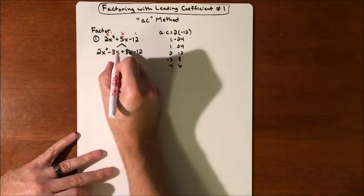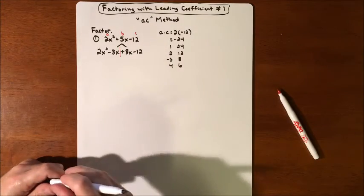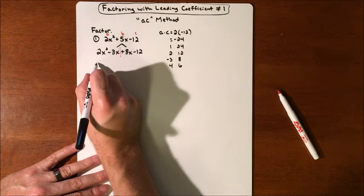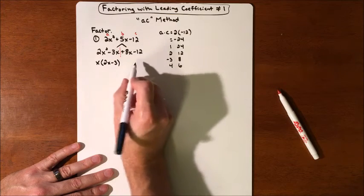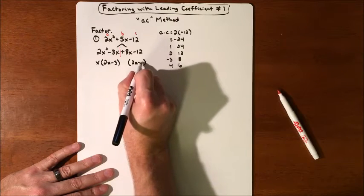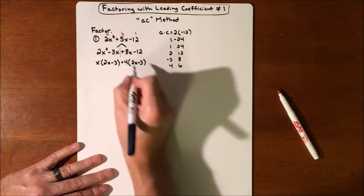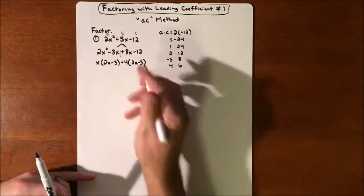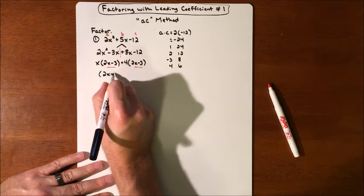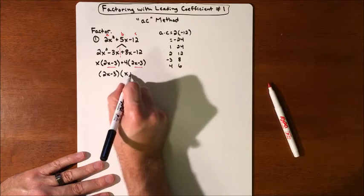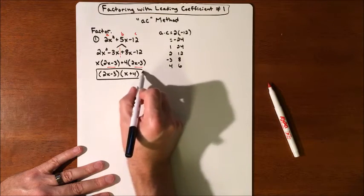What this just became is a factor-by-grouping problem. We have four terms, and we're going to factor out the greatest common factor out of each pair. The first two terms have an x in common, so we factor x out, leaving 2x minus 3. For factor by grouping to work, we need another 2x minus 3 from the second pair. We can factor a positive 4 out of 8 and negative 12 to get 2x minus 3. Now both groups have 2x minus 3 in common, so we factor that out and are left with x plus 4. Those are your factors.